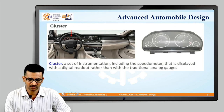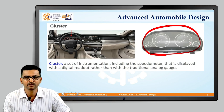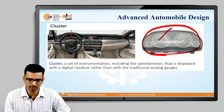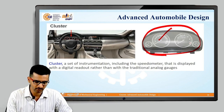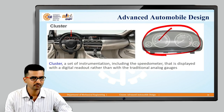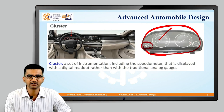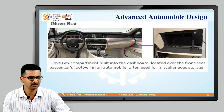Next is the instrument cluster. As discussed, the cluster is the actual part where the meters are provided. For example, here is the speedometer, here is the tachometer, and on the other side there is the engine coolant temperature gauge or fuel level indicator. This is the instrumentation cluster.